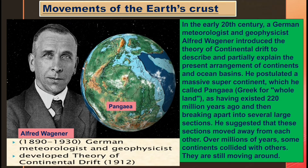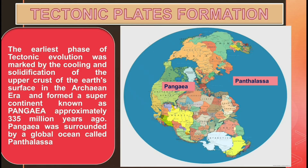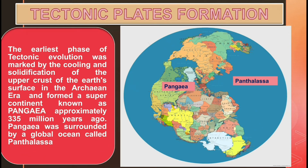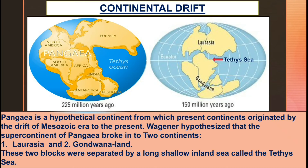About 220 million years ago there was only one continent called Pangaea. The earliest phase of tectonic evolution was marked by the cooling and solidification of the upper crust of earth's surface in the Archaean era, forming a supercontinent known as Pangaea approximately 335 million years ago. Pangaea was surrounded by a global ocean called Panthalassa.